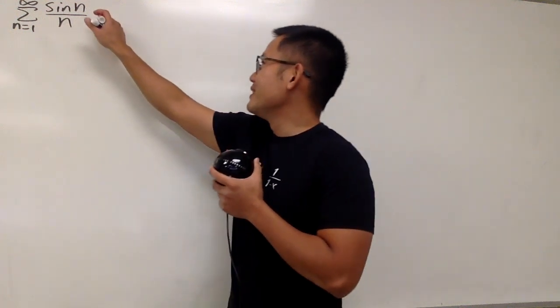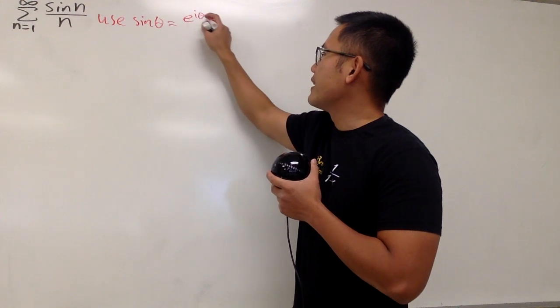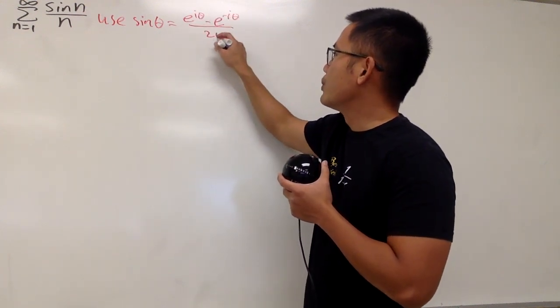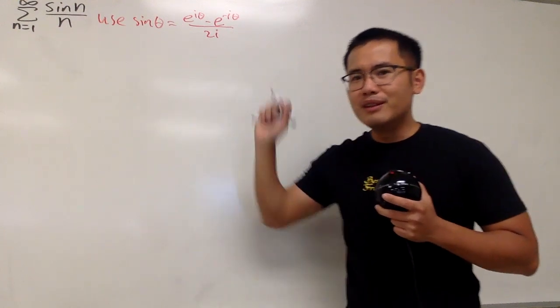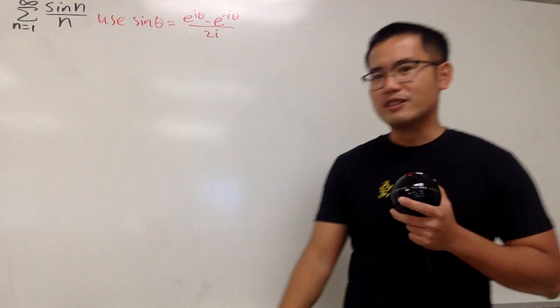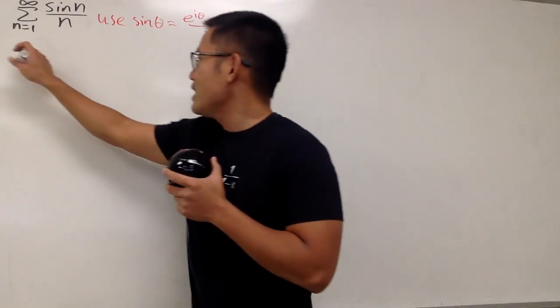So, here is the deal. We are going to use sine theta being equal to e to the i theta minus e to the negative i theta all over 2i. And we have done this kind of thing quite a few times in the past, right? The complex definition for sine theta. So now, let's go to the complex world and hope for the best.